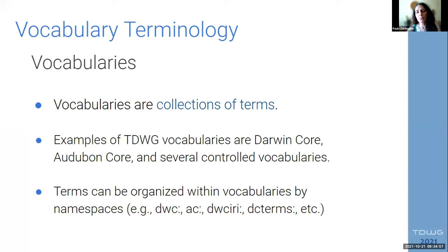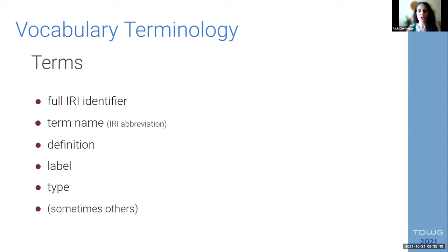Within vocabularies, the terms can be organized by their namespaces. For example, in Darwin Core, we have some terms that have a namespace DWC and some others that have DC because they are taken from another standard — from Dublin Core. Each of the terms in a vocabulary has a set of characteristics listed here on the left of the slide, and we will go through each of those.